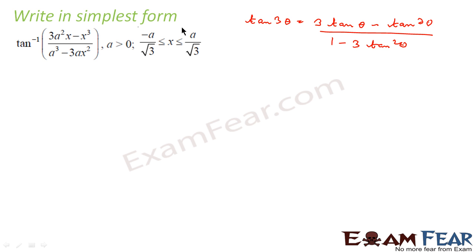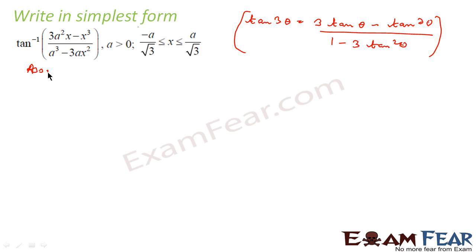What we can do here is put x = a·tanθ. Then the numerator becomes 3a²·(a·tanθ) - (a·tanθ)³ = a³(3tanθ - tan³θ), and the denominator becomes a³(1 - 3tan²θ), so a³ and a³ all cancel. This is the assumption, based on the tan(3θ) formula.